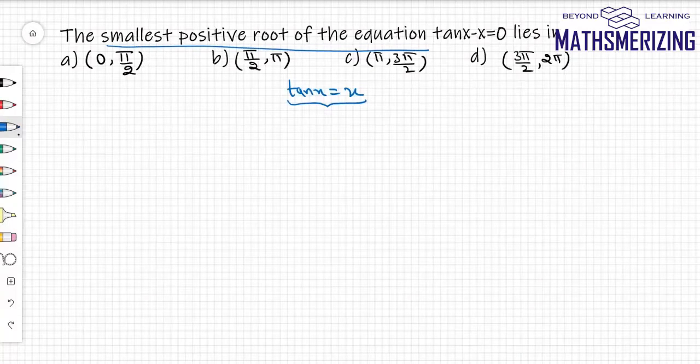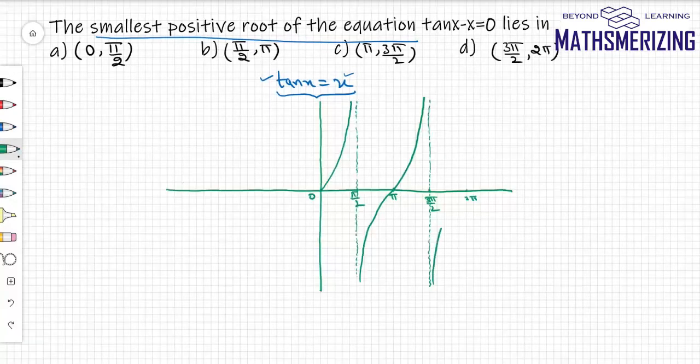So what I'll do is I'll draw the graph of tan x and I'll draw the graph of y equals x line. So first I'll draw the graph of tan x. So that's the graph of tan x. Now I'll draw the graph of y equals x line.